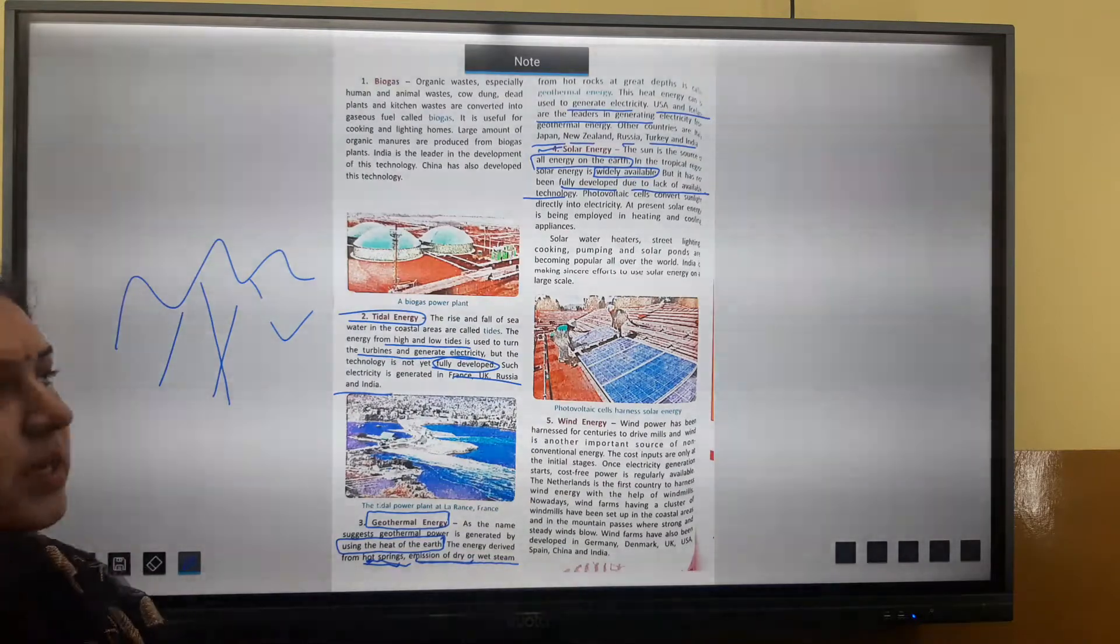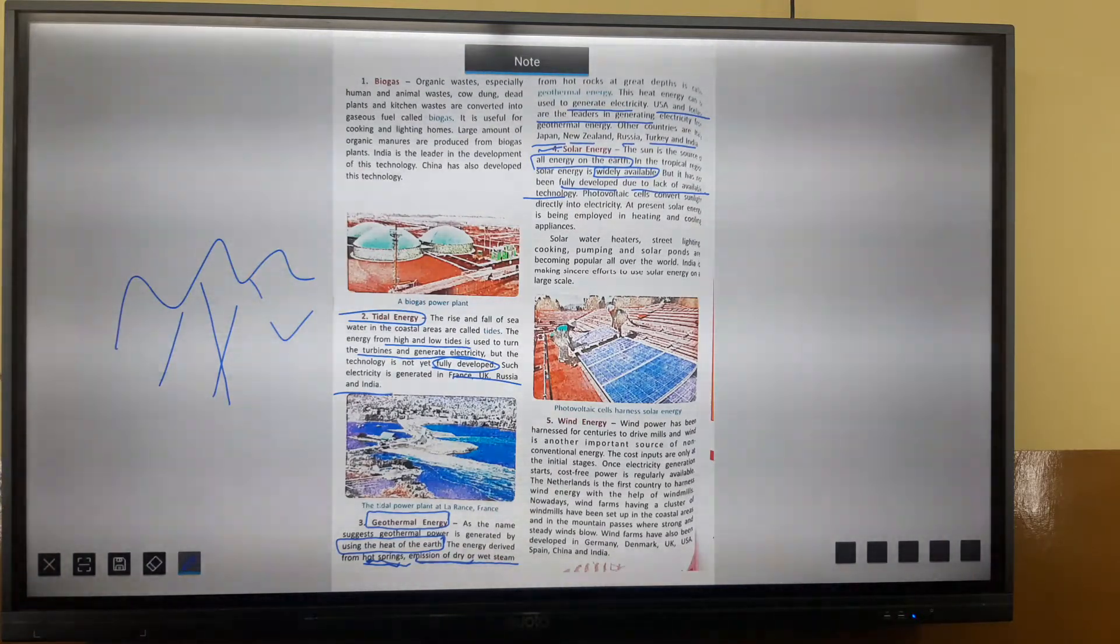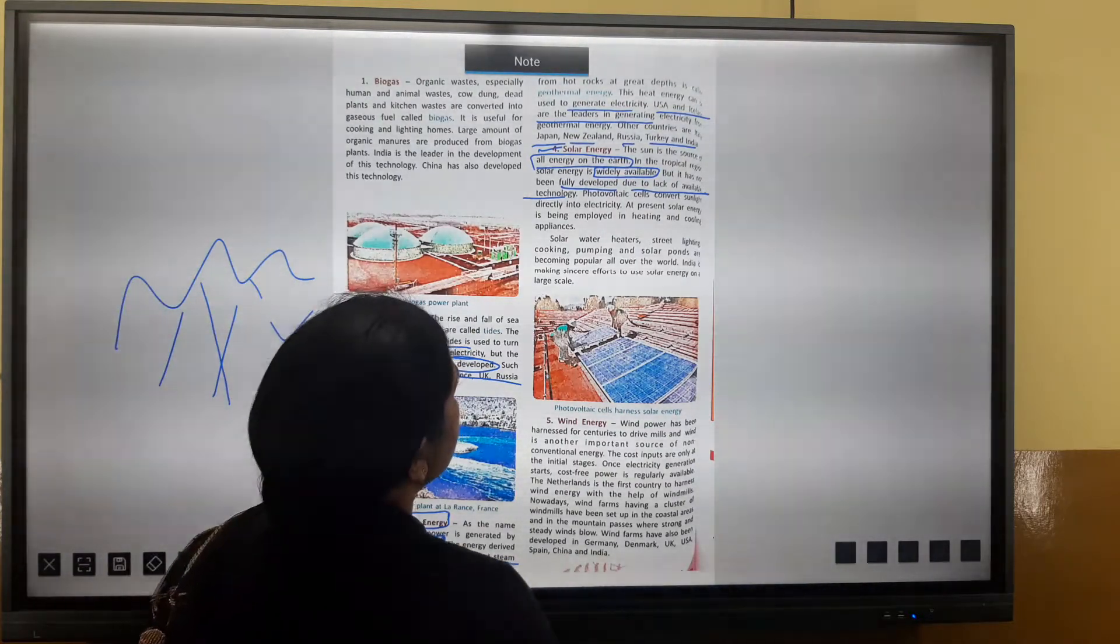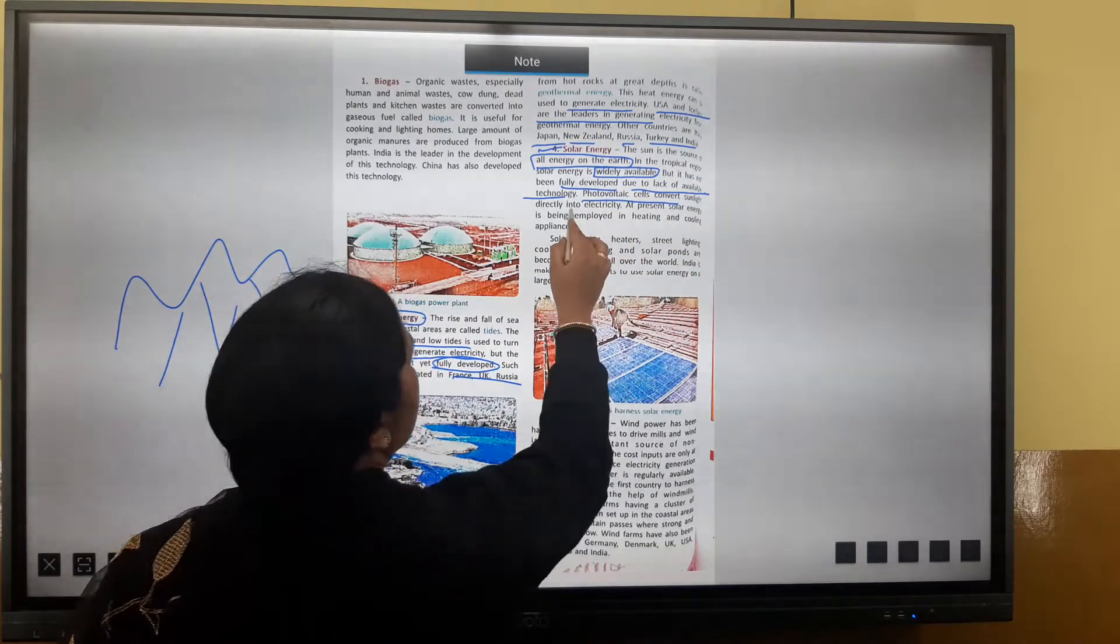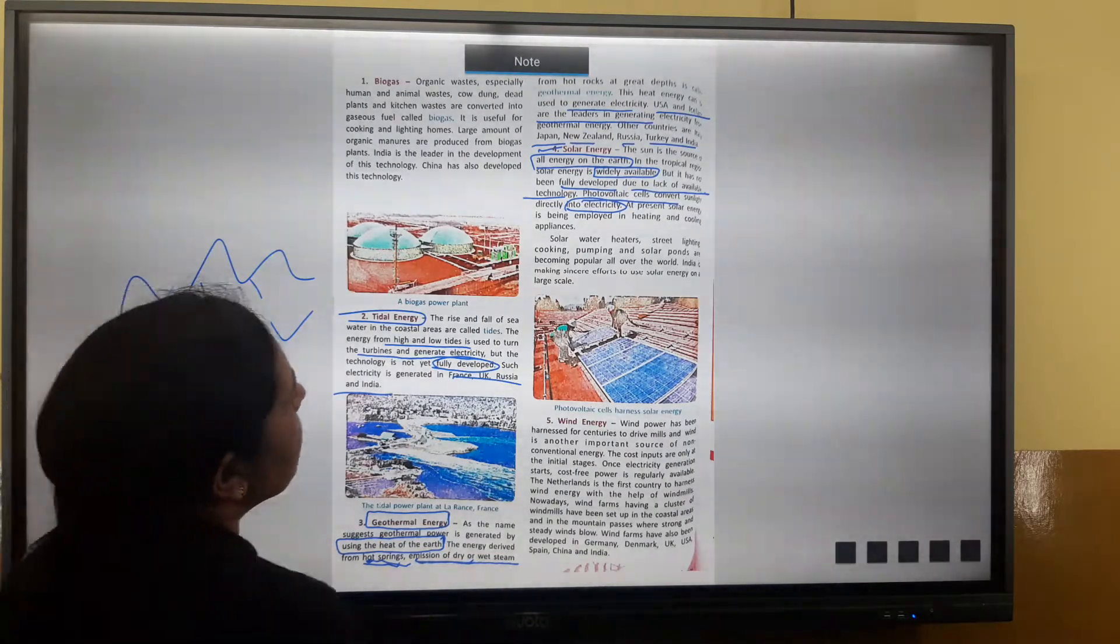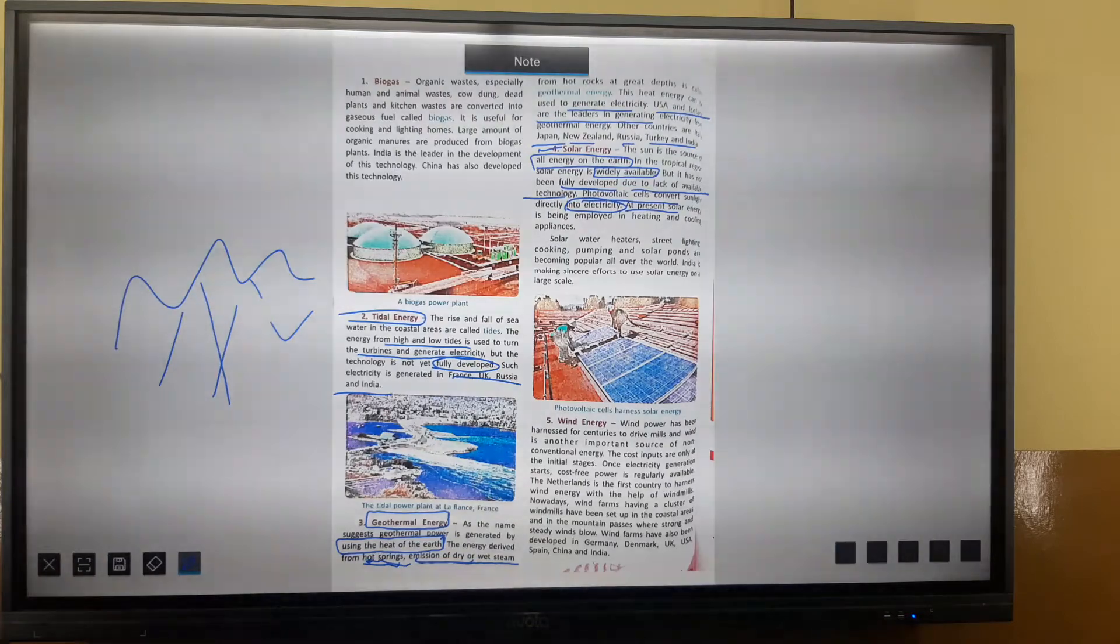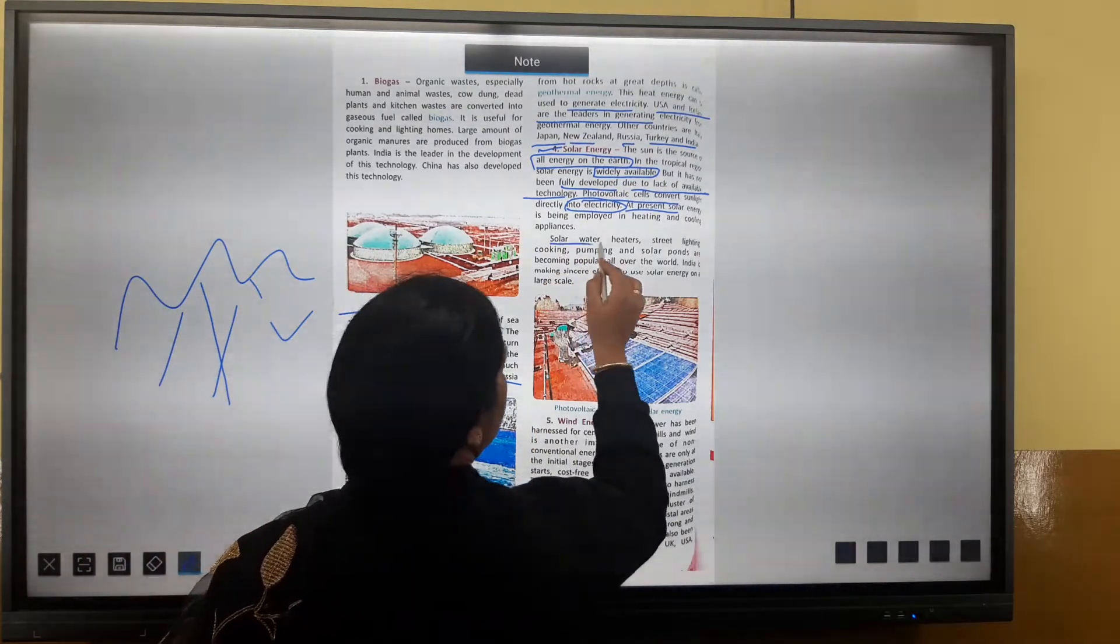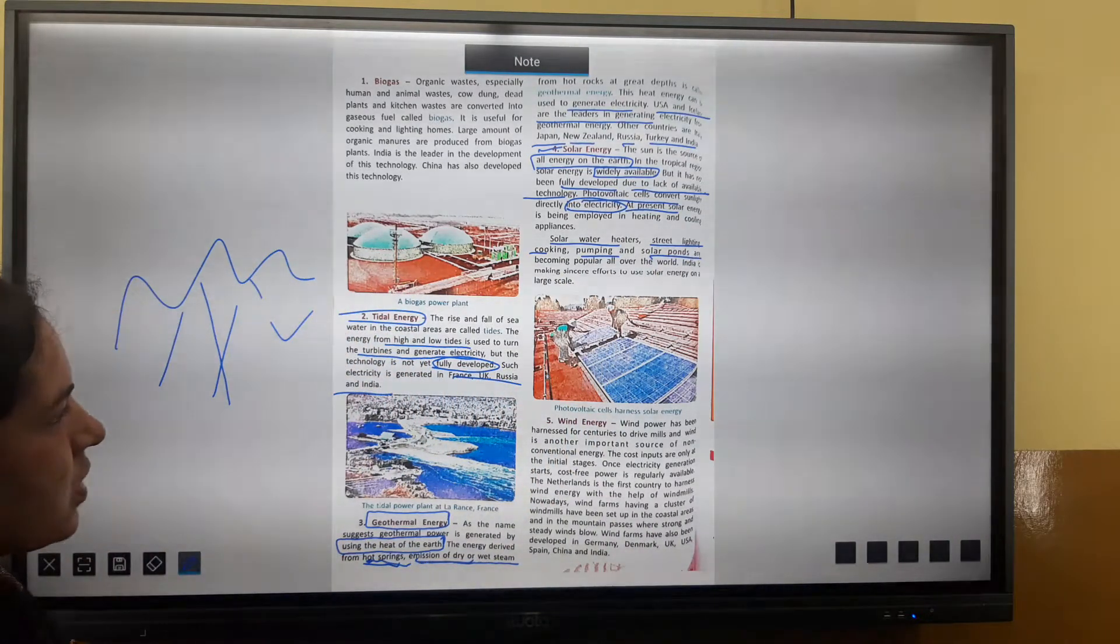At present, solar energy is being employed in heating and cooling at various places. Applications include solar water heating, street lighting, cooking, pumping, and solar cookers. These have become popular in India.